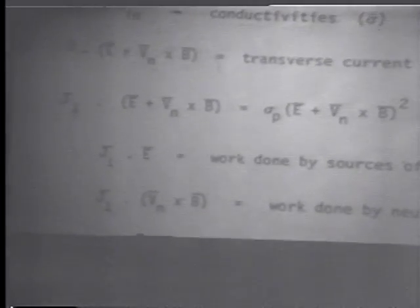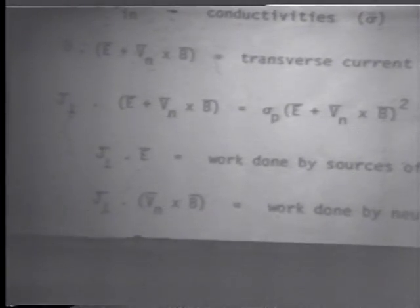We can decompose this into two parts. The work done by the electric field is simply J·E, which is what we're accustomed to dealing with in resistors and similar things. Note that J itself involves neutral wind — it's electric field plus V-neutral cross B that enters into J, so it's not just a pure electric field part. Similarly, the work done by the neutral wind is J dot V-neutral cross B.